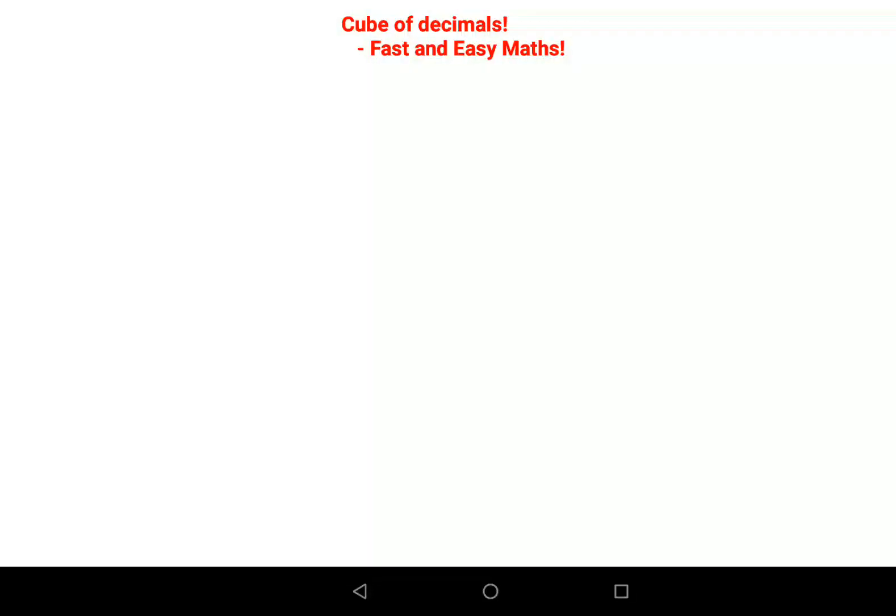Welcome everyone to my channel, Fast and Easy Math, which is dedicated to give you tips and tricks related to mathematics. Today I'm going to show you a trick to find the cube of any decimal number. For the beginning, let's start with something simple: 0.7 cube.